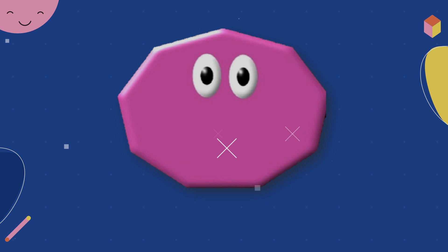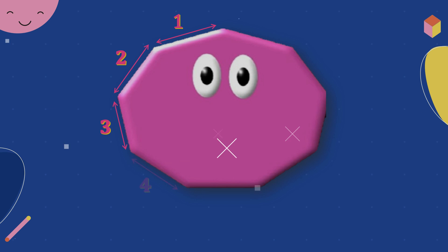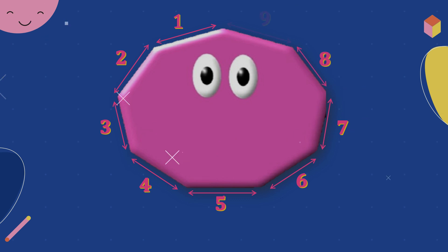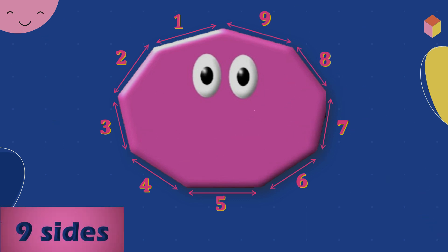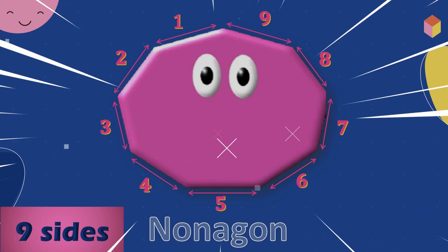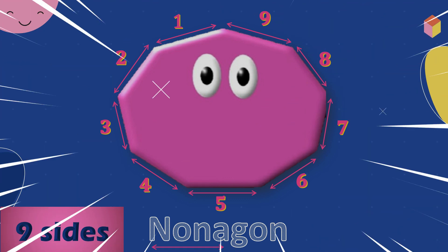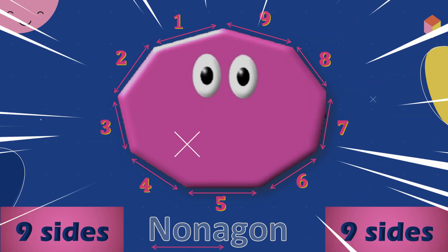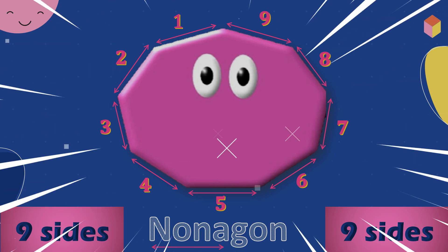Let's count the number of sides. One, two, three, four, five, six, seven, eight, nine. Nine sides. Nine sides is Nonagon. Nona means nine. Nonagon.